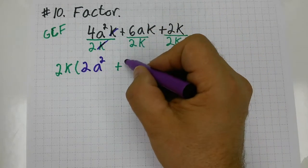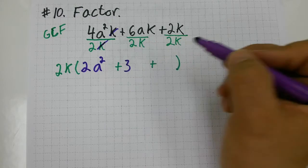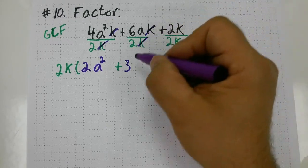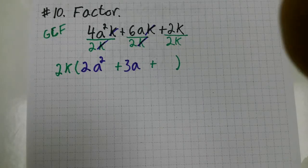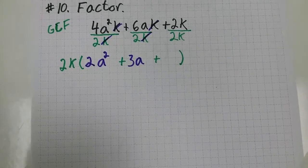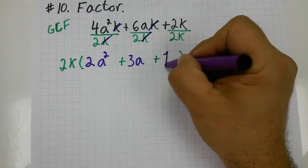6 divided by 2, that leaves me 3. And then the k divided by k, that simplifies and leaves me with just 3a. And 2k divided by 2k, anything divided by itself, is going to give me 1.